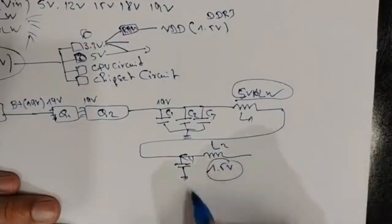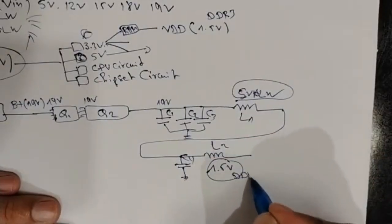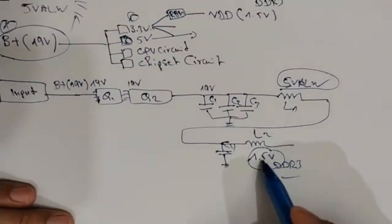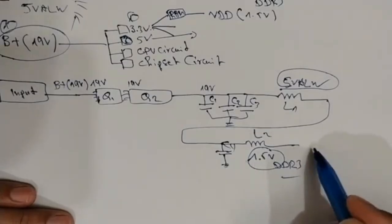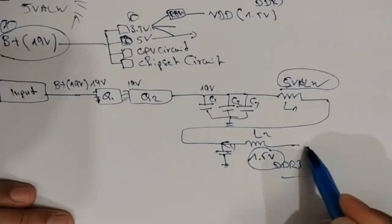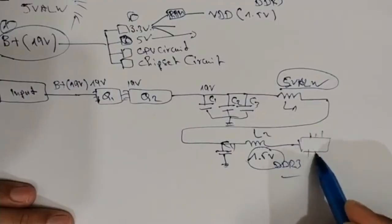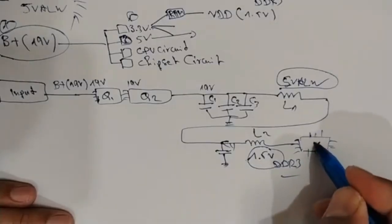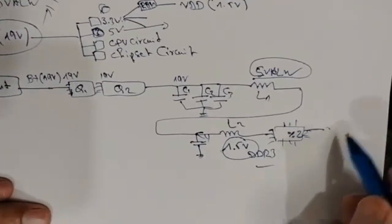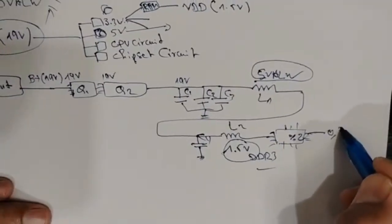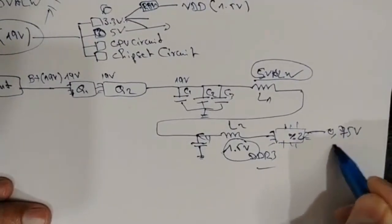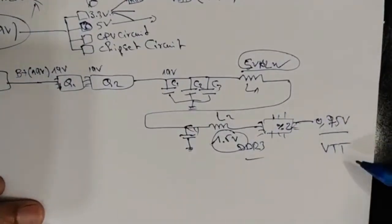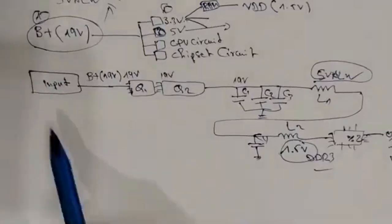In this inductor L1/L2 we find 5 volts, and from that inductor we get 1.5 volts for DDR3 RAM. This 1.5 volts is then applied to a divider circuit.